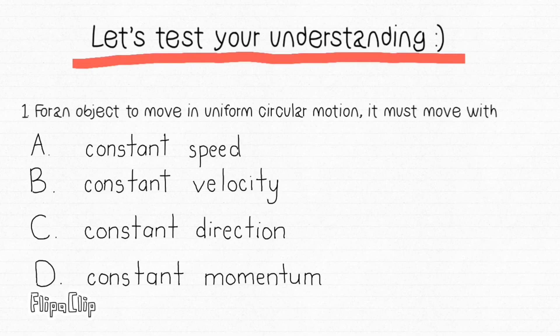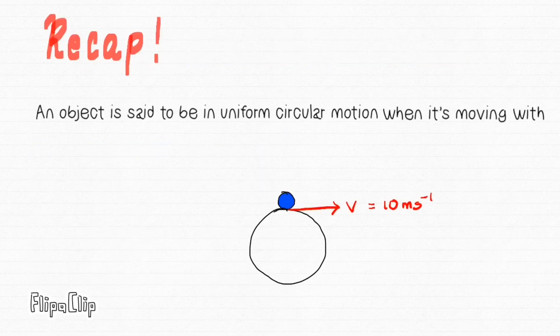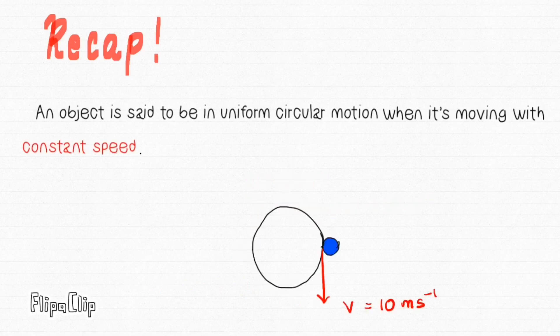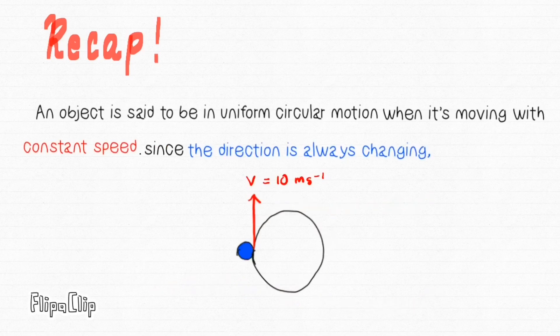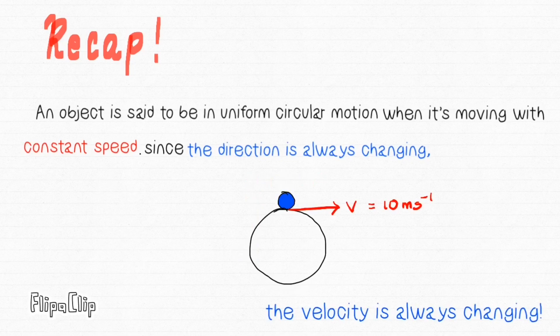If you answered a, that means your answer is correct. An object is said to be in uniform circular motion when it's moving with constant speed. Since the direction is always changing, the velocity is always changing.